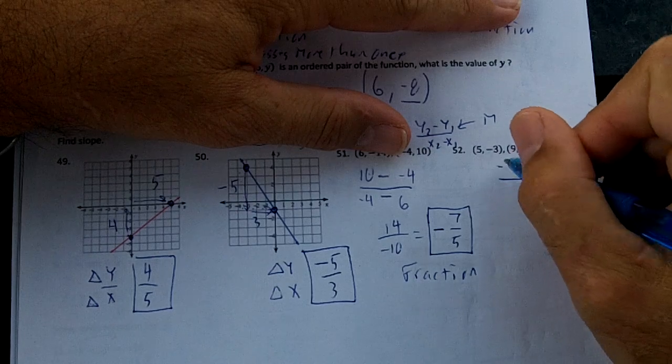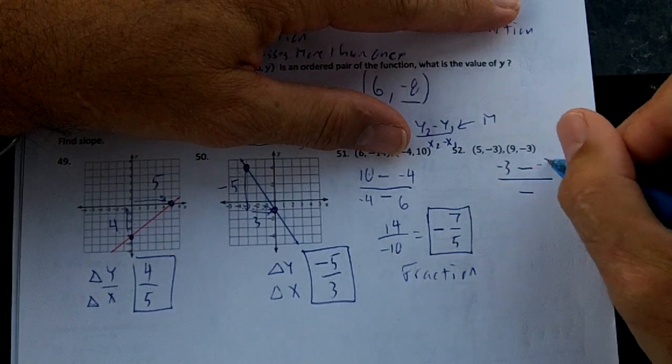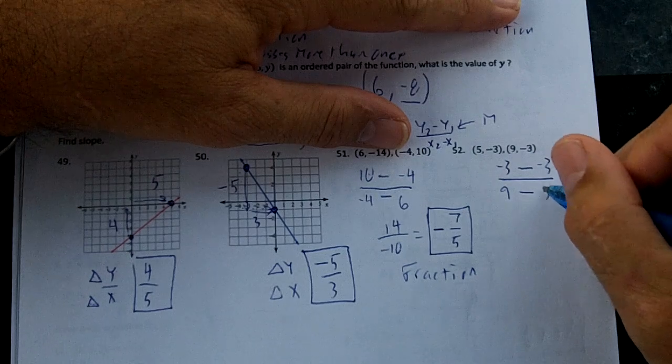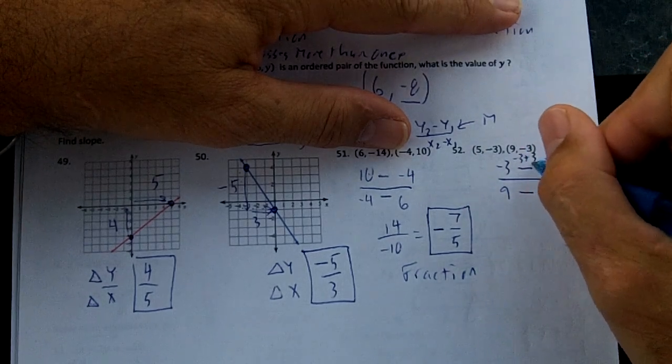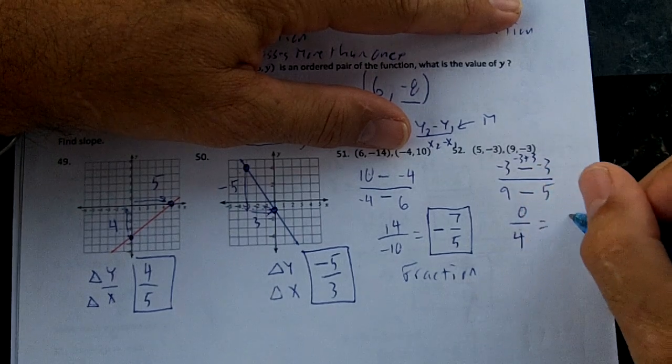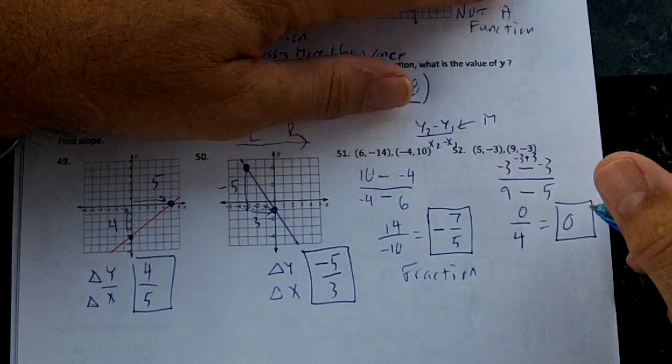Put minus minus. Y2 is negative 3. Y1 is negative 3. X2 is 9. And X1 is 5. So these are going to be negative 3 plus 3, right? Which is 0 over 4. 0 divided by 4 equals 0. So this is a 0 slope.